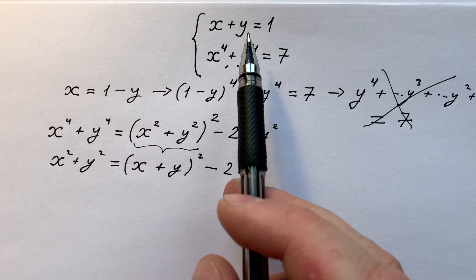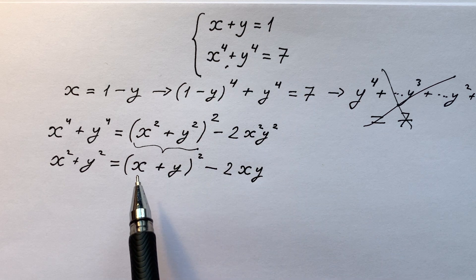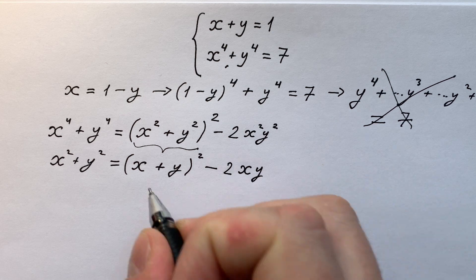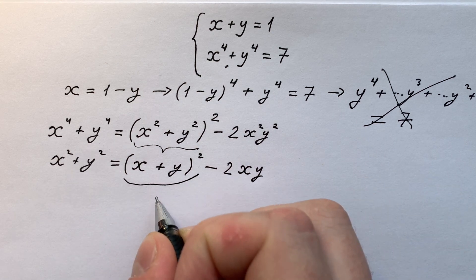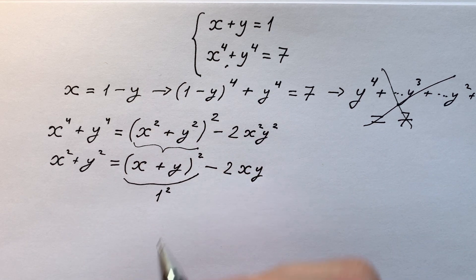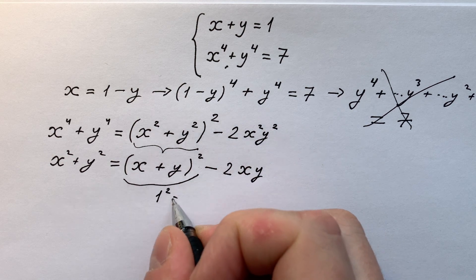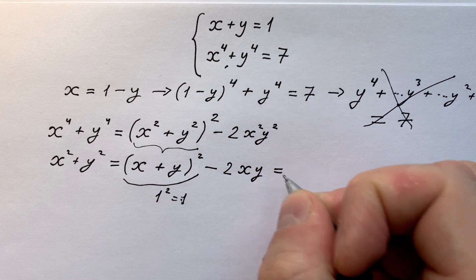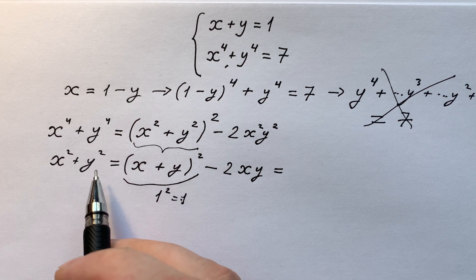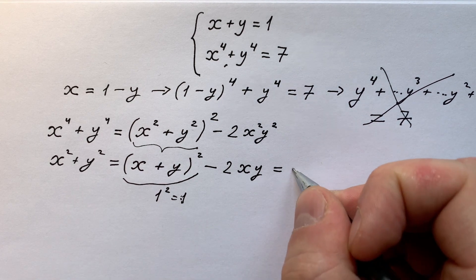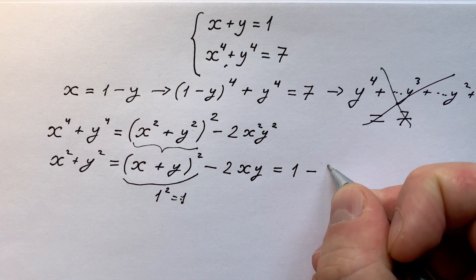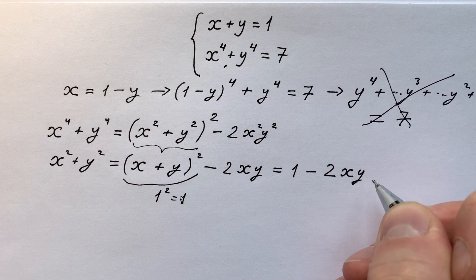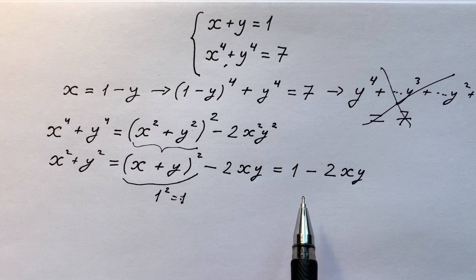Now look at the first equation of our system: x plus y equals 1. We have (x + y)² appearing in our expression, so we understand that it equals 1 squared, which is 1. Therefore, x² + y² equals 1 minus 2xy.